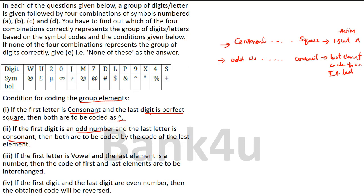Condition 3 — if the first letter is a vowel and the last element is a number, then the codes of the first and last elements are to be interchanged. So we need to interchange the code for the first and last elements. Whatever elements come in between, the same code is placed as it is.